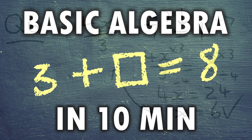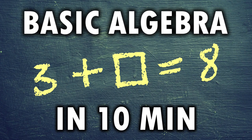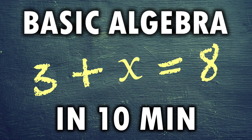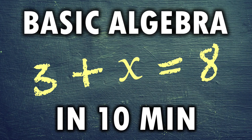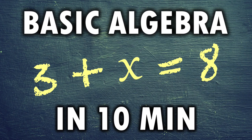Anyway, that was basic algebra in 10 minutes. The key takeaways are that we usually use letters instead of boxes. So 3 plus X equals 8, although you can use any letter that you like. The next thing that we should remember is that the goal is to get X on one side by itself in order to solve the problem. So in this case, we'll end up getting X equals 8 minus 3, or X equals 5.